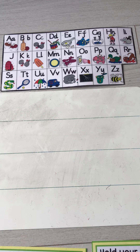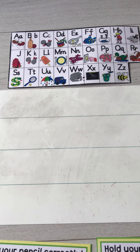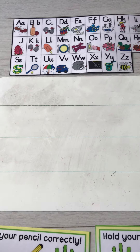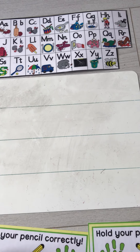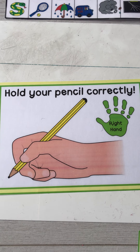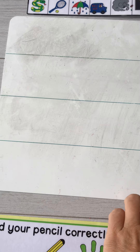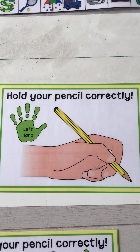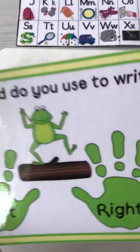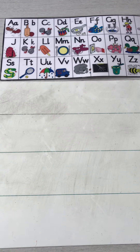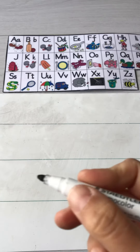Hello children! It's time to try and write letter A, that makes the sound 'ah ah ah'. Some of you hold the pencil in the right hand, some of you hold the pencil in your left hand. Which hand do you use to write? I'm going to show you how we're going to hold the pen. This is my pen and I'm going to write letter A on my whiteboard.